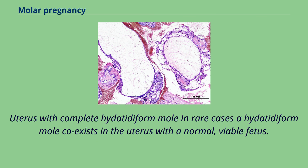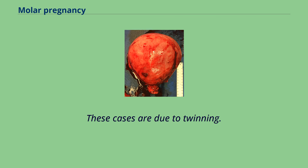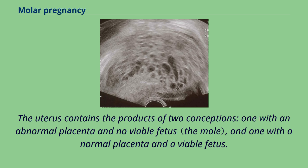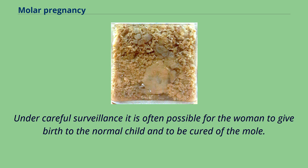In rare cases, a hydatidiform mole coexists in the uterus with a normal, viable fetus. These cases are due to twinning. The uterus contains the products of two conceptions: one with an abnormal placenta and no viable fetus, and one with a normal placenta and a viable fetus. Under careful surveillance it is often possible for the woman to give birth to the normal child and be cured of the mole.